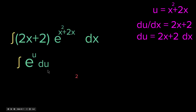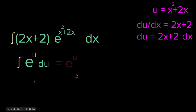See how simple that is? The integral of e^u du is just e^u, because the integral of e^u is e^u and its derivative is e^u. Since u = x² + 2x, we substitute back: the result is e^(x² + 2x).